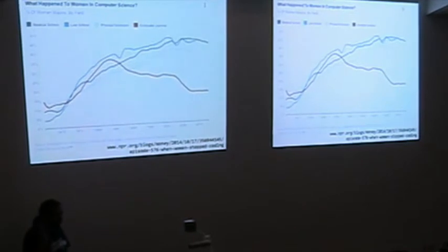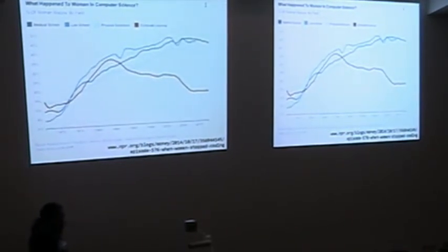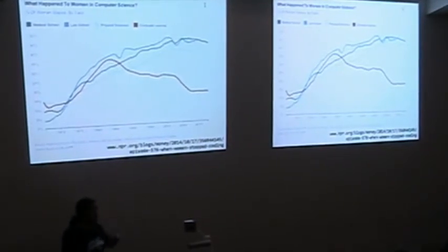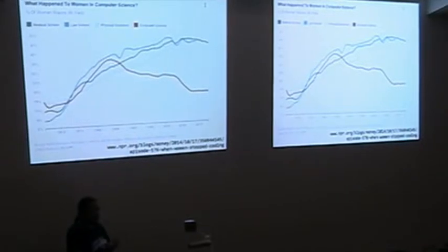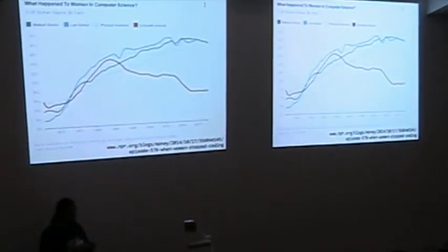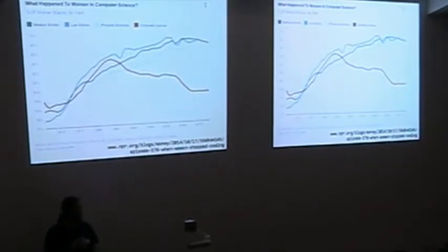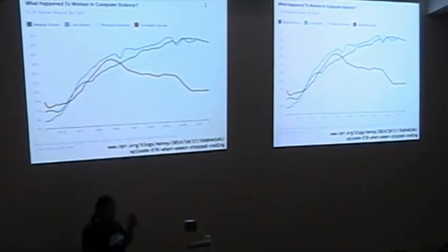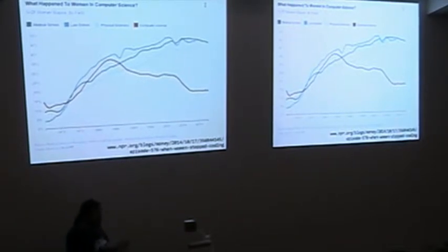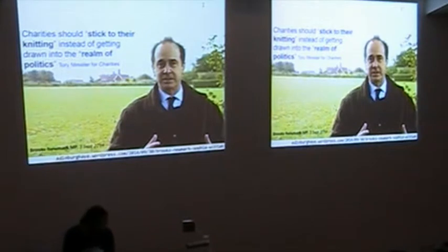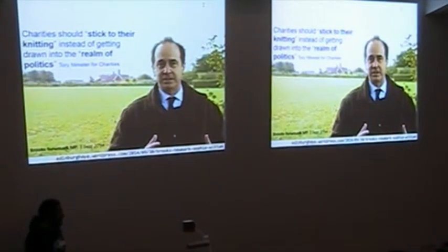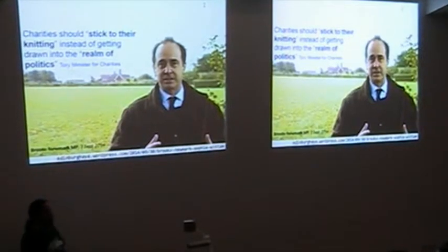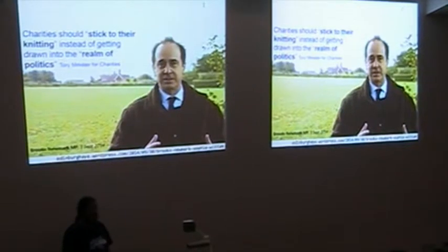And I think that's especially important because if you look at the number of women in computer science, this was rising along with all the other professions like law and medicine up until around the mid-80s, and suddenly kind of just tails off. And this is a huge kind of social problem. And if you think this year with things like Gamergate and kind of troll mobs, which are actually actively trying to discourage the participation of women in computing, this is an actual social and political problem that I think we as a community can help address. This is the former Minister for Charities who suggested that charities shouldn't get involved in politics, they should stick to knitting.